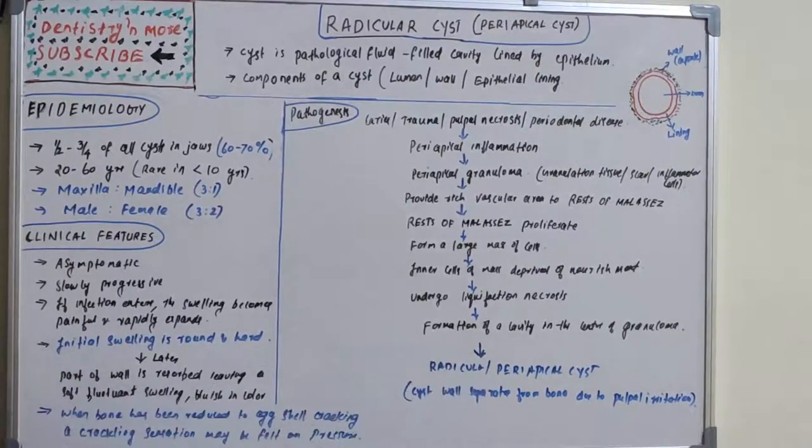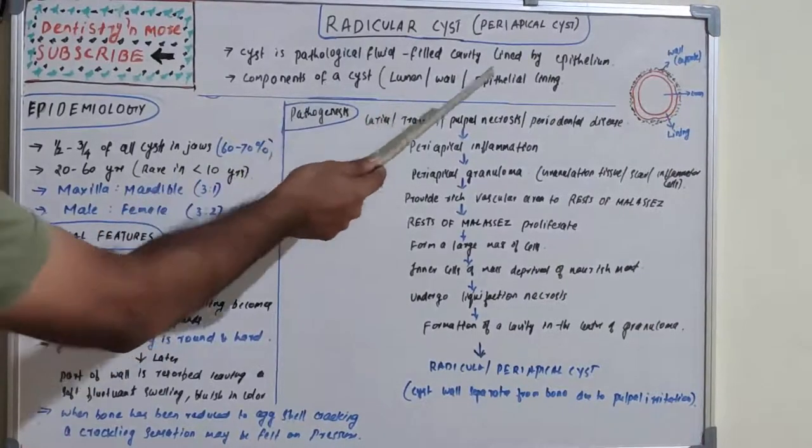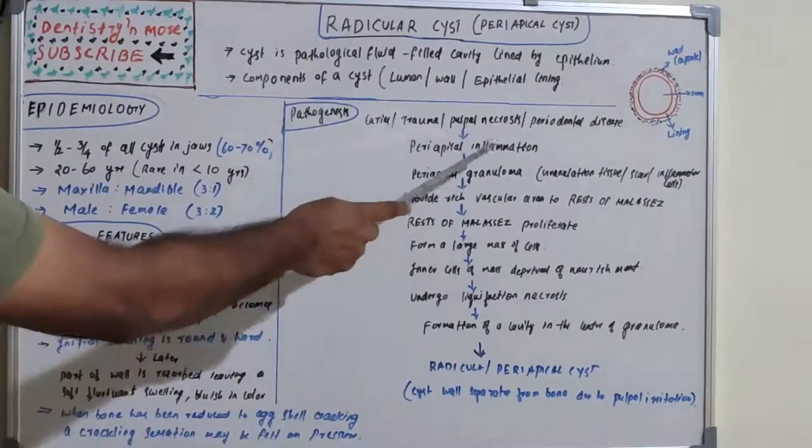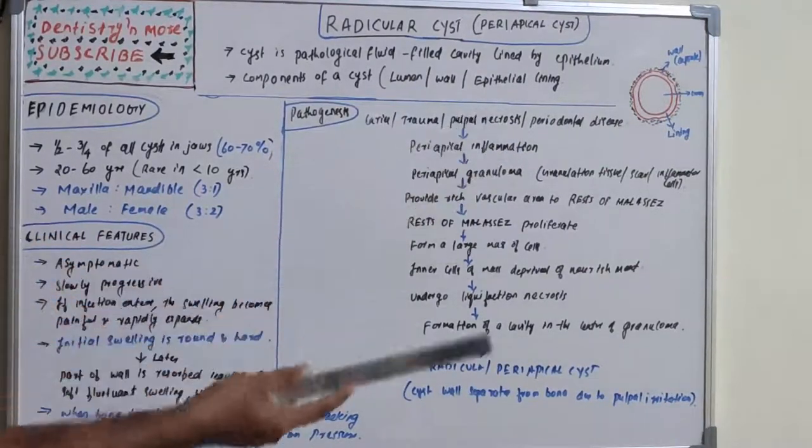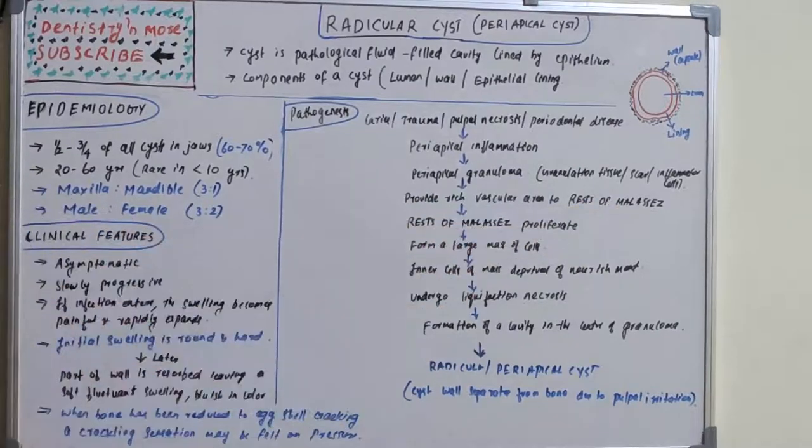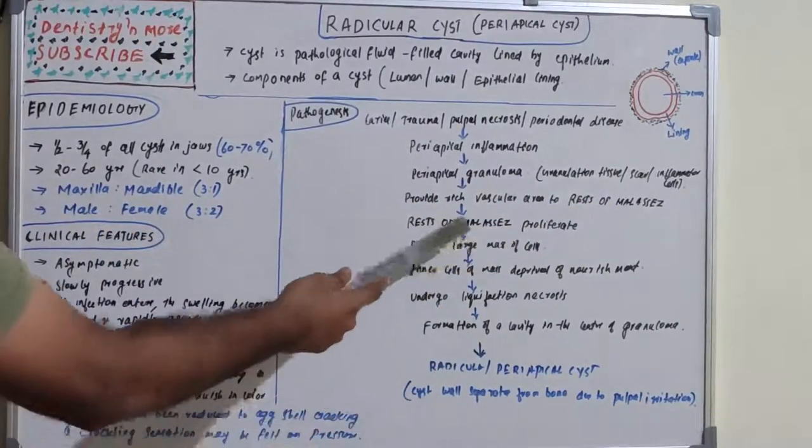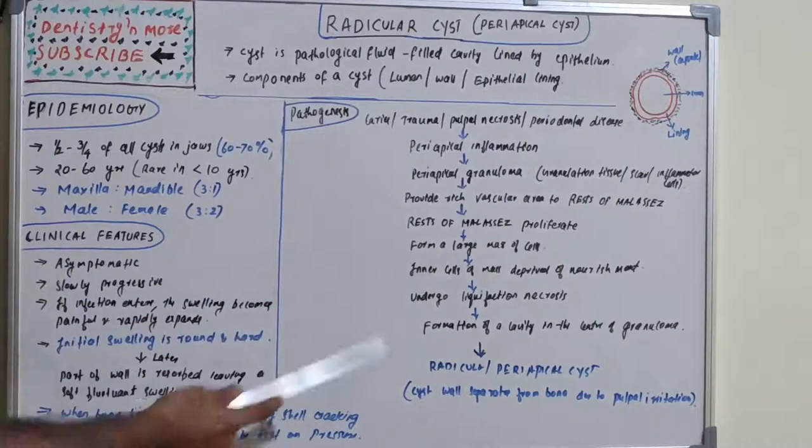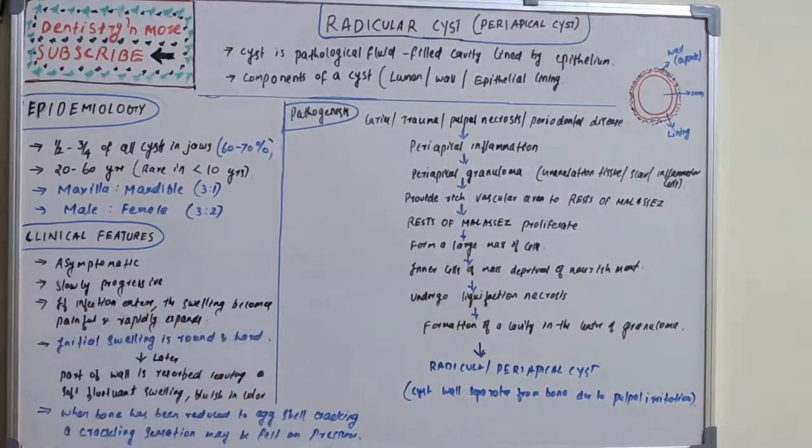The inner cells undergo liquefaction necrosis, formation of a cavity in the center of granuloma, ultimately resulting in a proper epithelial cavity which is radicular or periapical cyst. The cyst wall separates from bone due to pulpal irritation. It starts with caries, trauma, necrosis, or periodontal disease causing inflammation, periapical granuloma, then cell rest of Malassez proliferates, becomes a large mass, inner mass deprived of nourishment undergoes liquefaction necrosis and forms a cavity.